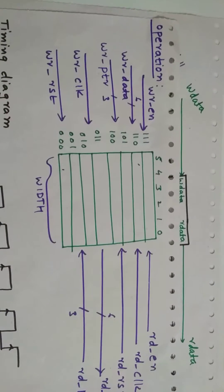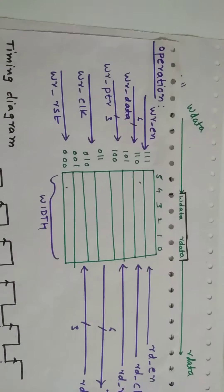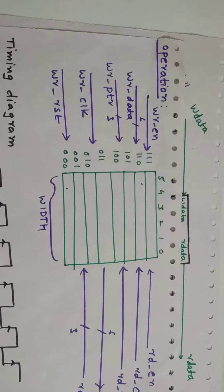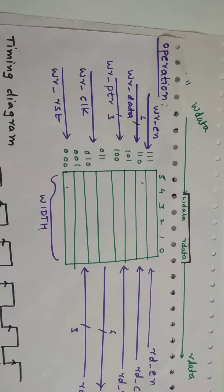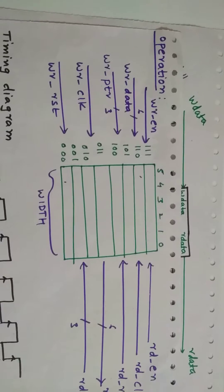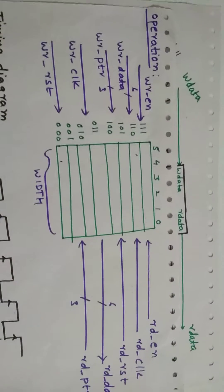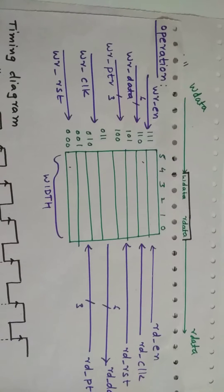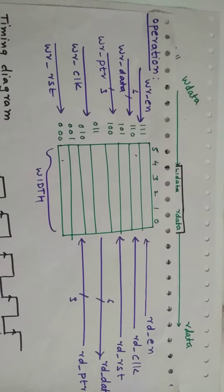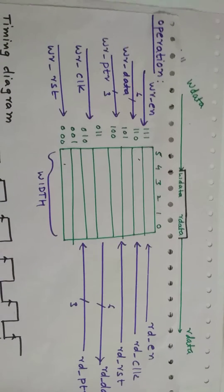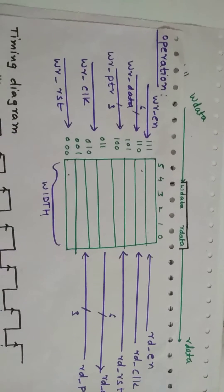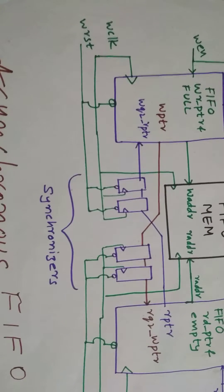So, how are we going to know about the full conditions or empty conditions? In synchronous FIFO, there would be no problem because we would compare the write pointer and the read pointer. But here, to compare the write pointer and read pointer, we need to synchronize the data before comparing it. So, how are we going to synchronize it? We are going to use two-flop synchronizers.